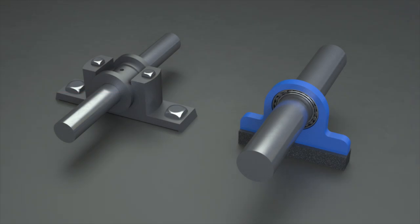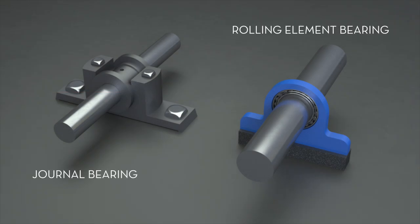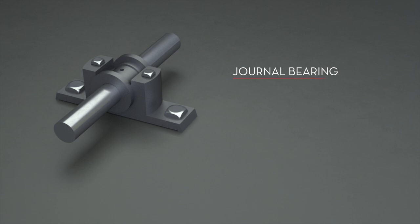There are two main types of bearings: journal and rolling element. Journal bearings are the simplest bearings. With no moving parts, the portion of the shaft in contact with the bearing, or journal, rides on a thin film of oil to support the shaft.